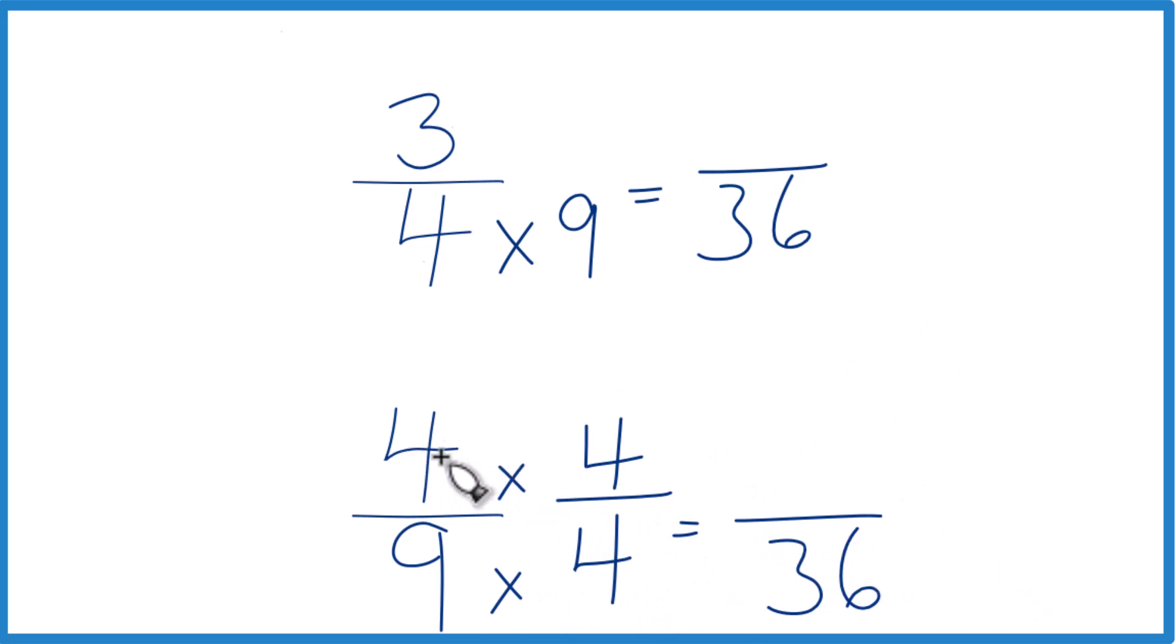Don't change the actual value, just the way it's represented. 4 times 4 is 16, and 16 over 36, that's an equivalent fraction for 4 ninths.